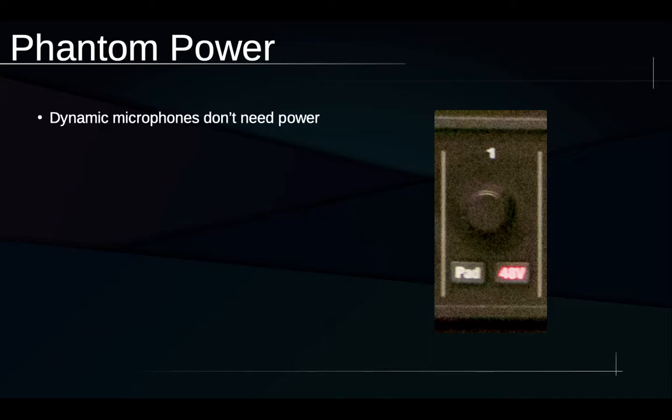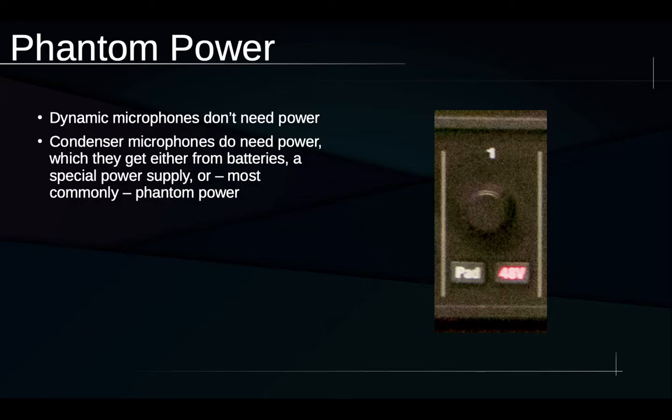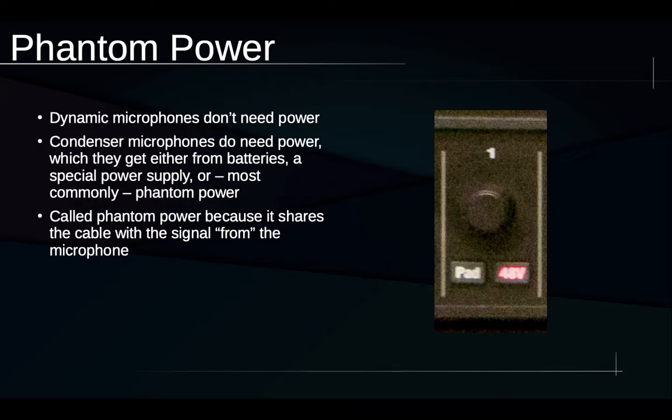So the dynamic microphone doesn't need power because, as we saw, being composed of a magnet and a coil, it is itself a generator of electricity. But condenser microphones do need power. They need some way of charging up those two plates that are so close to each other. And they can get this from a couple places. They can get them from some kind of battery system that's built into the microphone. Maybe they get it from some kind of special power supply that is designed specifically for that microphone. But the most common way of getting power to condenser microphones is something called phantom power. And the reason it's called phantom power is because we don't need any extra cables other than the microphone cable we're already using to get power to the microphone. The power that we're using to make this microphone work and the signal that we're getting back from the microphone, they coexist in the same cable. And so that's why it was called phantom power.